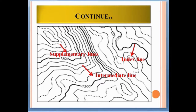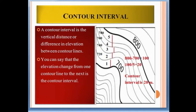Intermediate lines don't have a number label. And this dotted line is the supplementary line. So these are the three types of lines found in a topographic map. Now see here — these two are the index contour lines labeled 700 and 800.